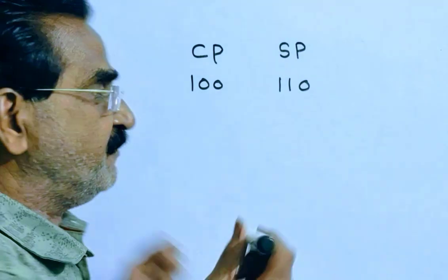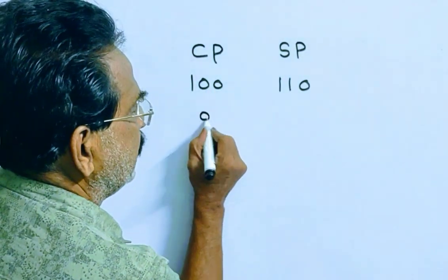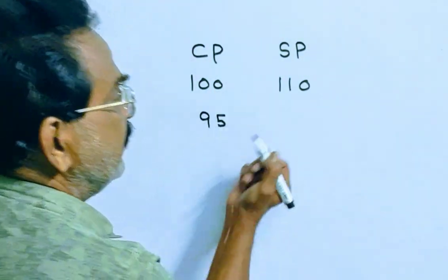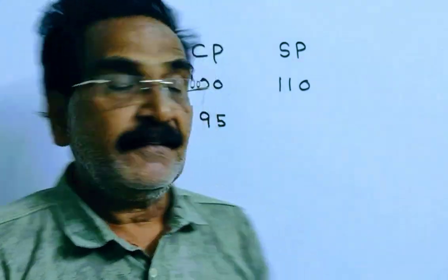Friends, it is given that if the cost price is 5% less — that means if the cost price is 95 — and was sold for Rs. 7 more, then there would have been a 20% profit.